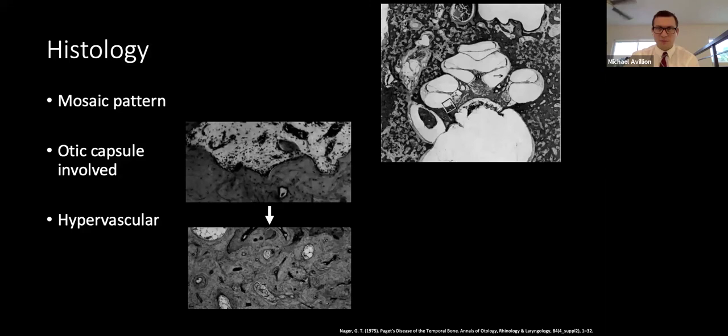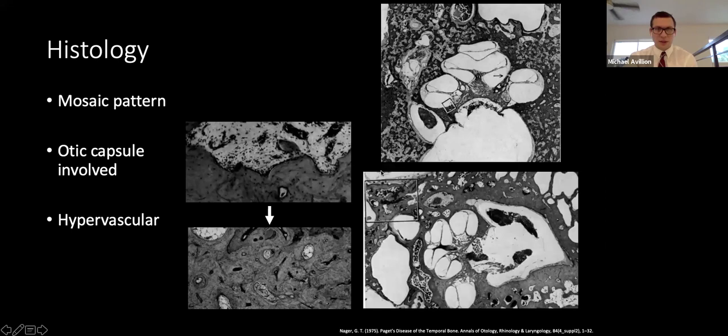A section through the pyramid of a 74-year-old female shows pagitoid remodeling in the cochlear capsule and near the modiolus, with a fracture of the partition between the lower basal turn and middle cochlear turn. The hypervascular nature of the disease is evident with neovascularization near the otic capsule.